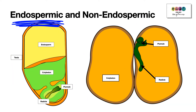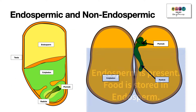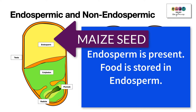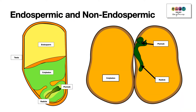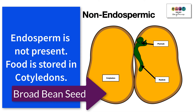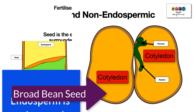Seeds are either endospermic or non-endospermic. At maturity, endospermic seeds still have the endosperm, and this is where the food is stored. Maize is an example of an endospermic seed. Non-endospermic seeds, like broad bean, have had their endosperm absorbed and the food is stored in the cotyledons instead.